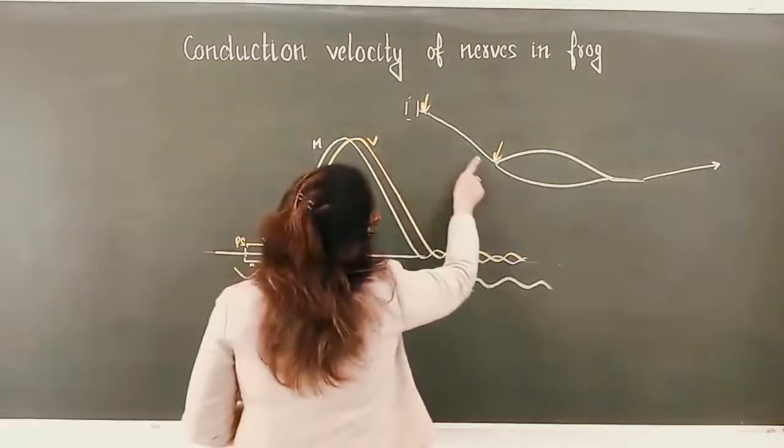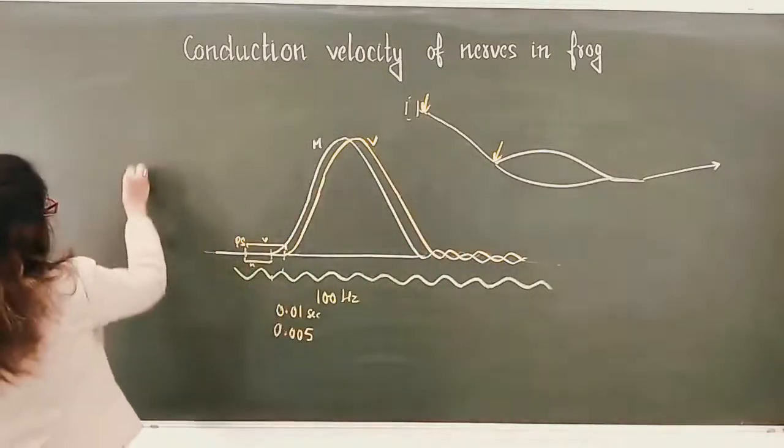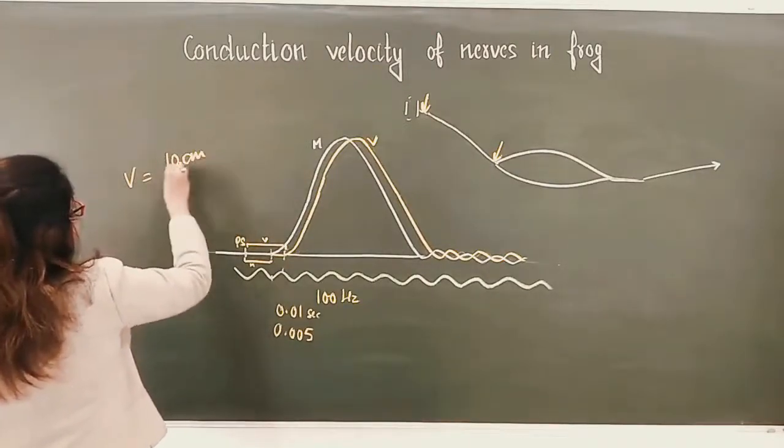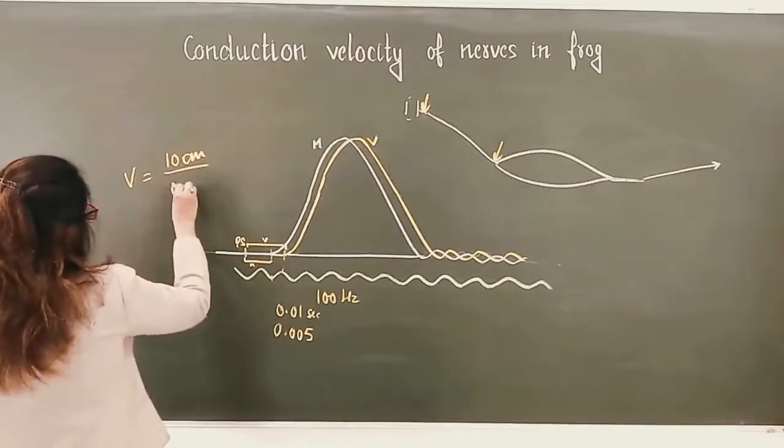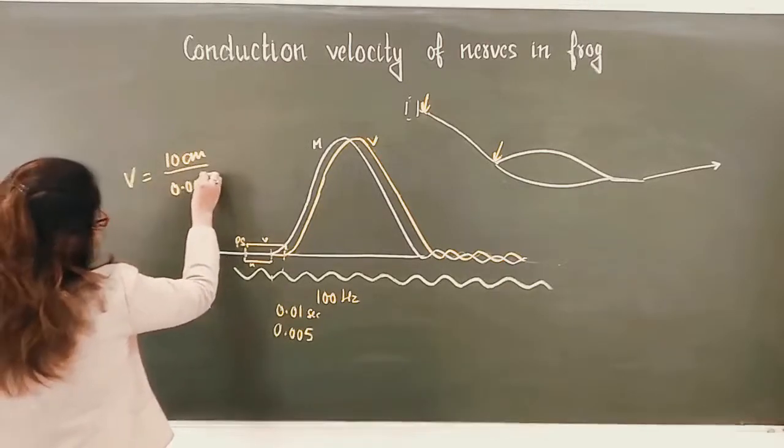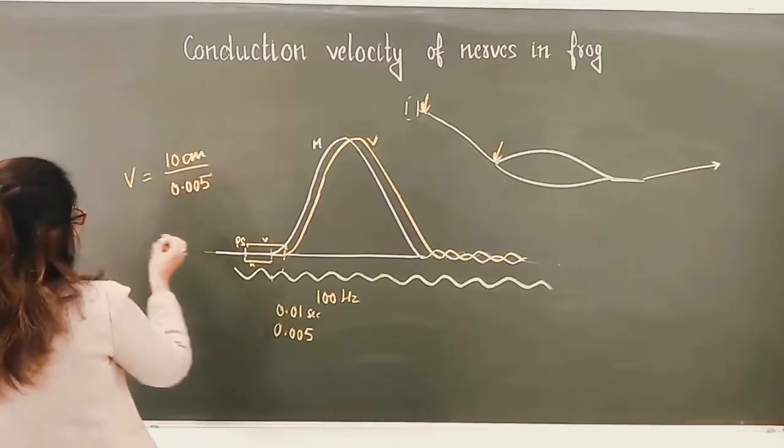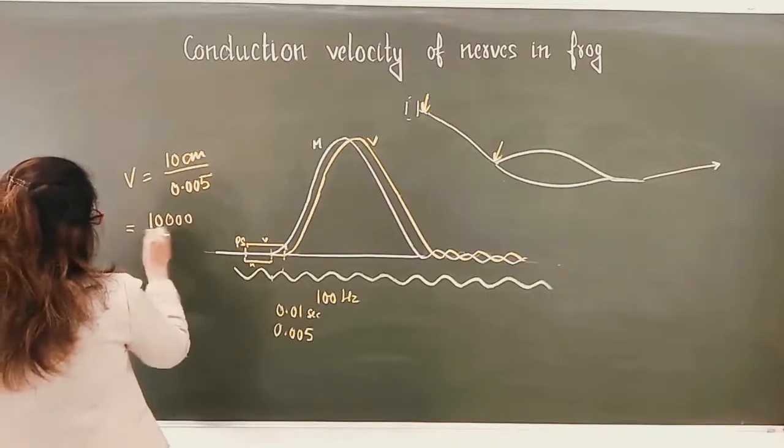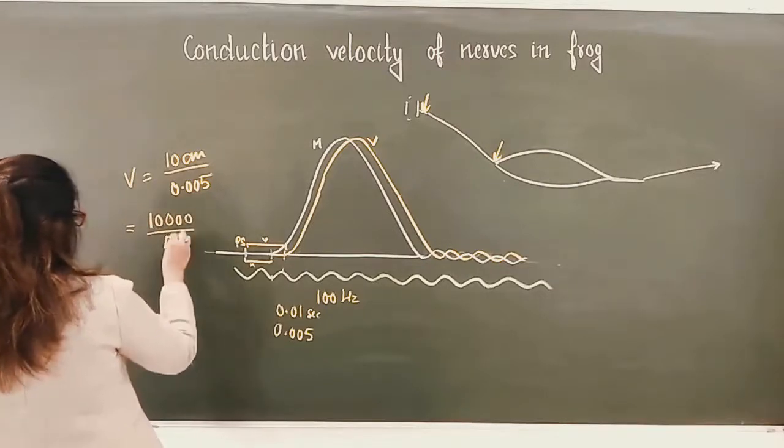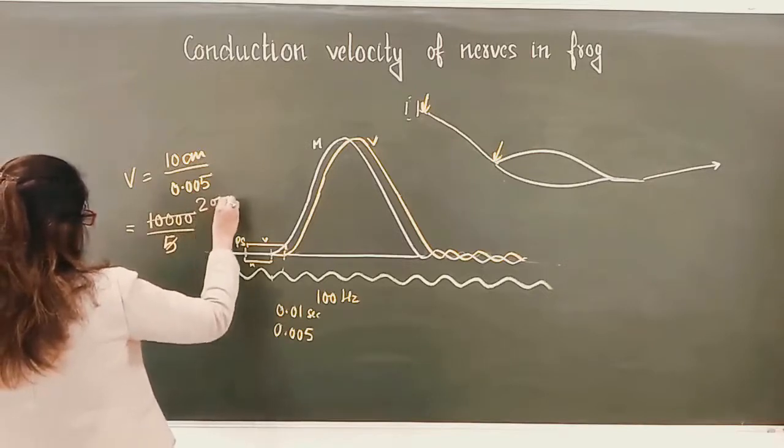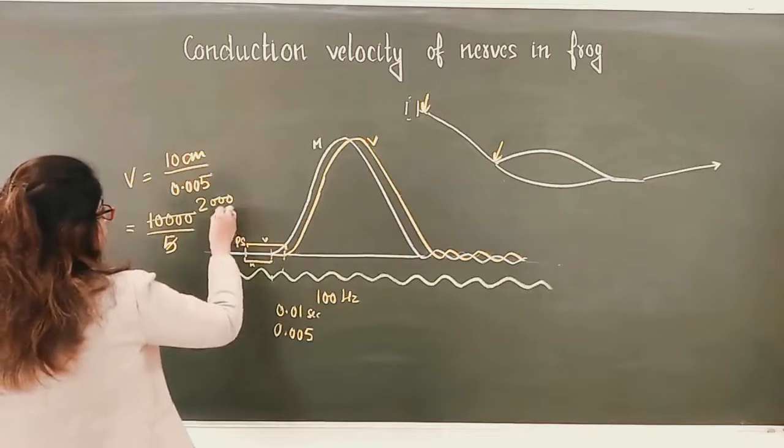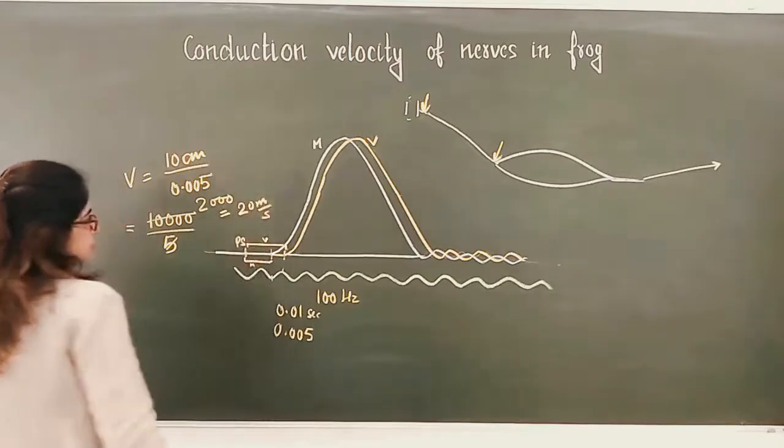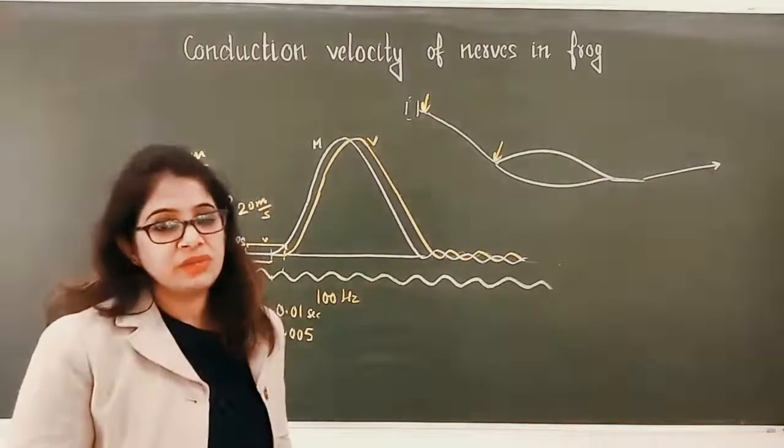Let us see how much is the velocity. Suppose this distance comes out to be 10 centimeters. So velocity is distance—suppose it is 10 centimeters—upon 0.005. So 10,000 divided by 5 equals 2,000 centimeters or 20 meters per second. The velocity that was calculated is 20 meters per second.